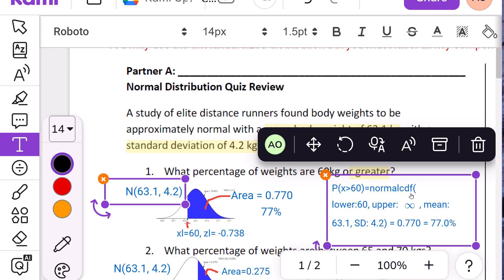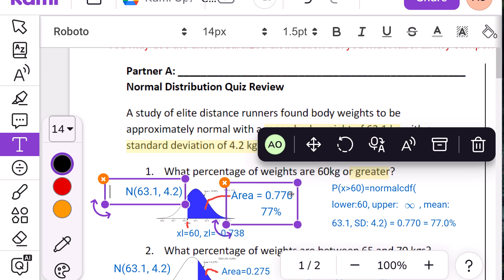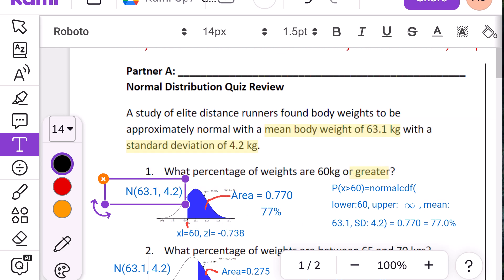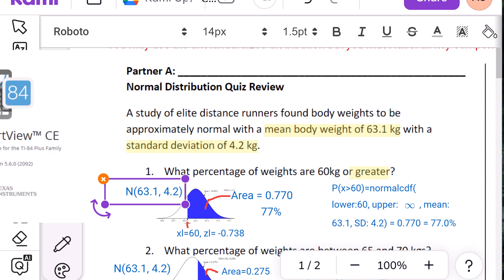So you have normal CDF. That tells me what distribution. You tell me your lower and your upper. Remember, on the calculator, you're going to do one E to the 99. Make sure you do the little blue E, not the green capital E. Well, it's still capital, but it's a little one. And then 99. The mean is just from our problem, 63.1, and our standard deviation is 4.2. And if you put that all in your calculator, it will basically give you 0.770.